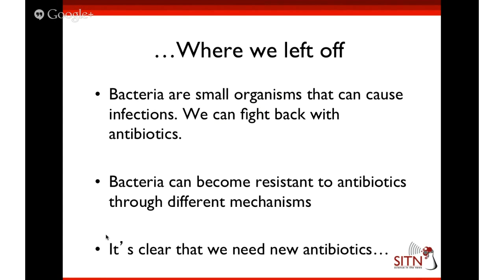We can also build antibiotics all by ourselves. There's a small class of man-made antibiotics. Actually, the very first antibiotic that was used was called salvarsan, and this is completely synthetic. It was discovered in 1909 by Sahachiro Hata and Paul Ehrlich and was used to treat syphilis. The one problem is that it has arsenic in it — so not a very good antibiotic. But it would kill your syphilis.